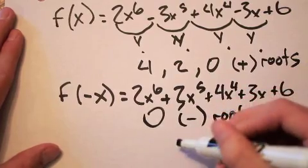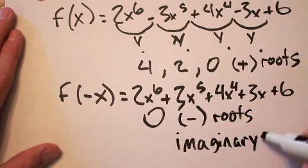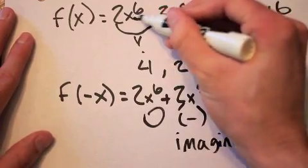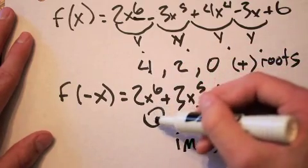Now, the trickiest part is to figure out the imaginary roots. The key is to remember that we need six total roots. So with each possible combination, we need to add up to six.